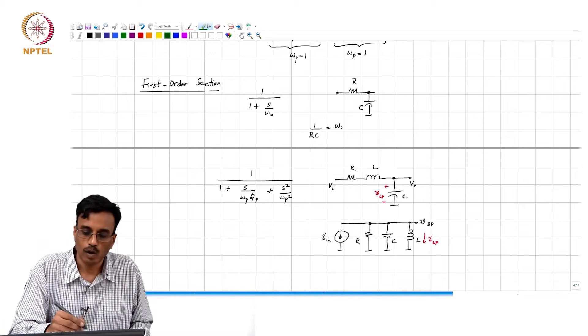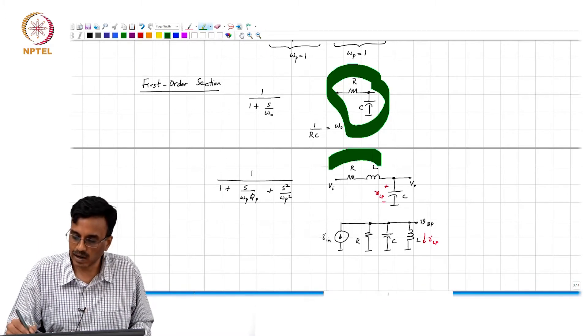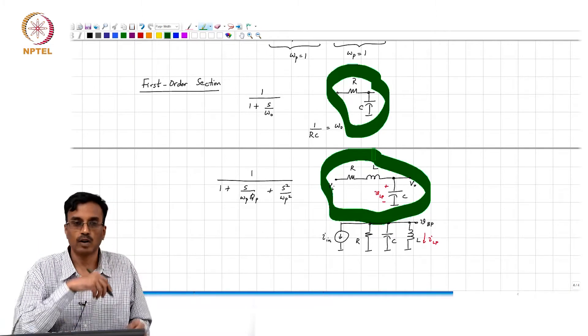Across the inductor you have a high pass filter transfer function and so on. So how do we realize the third order transfer function?